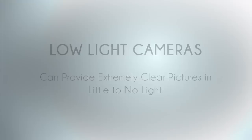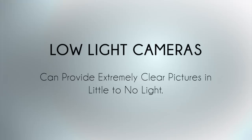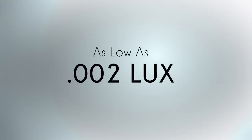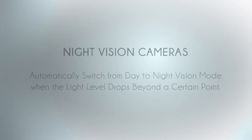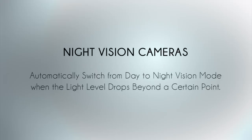Low light cameras can provide extremely clear pictures in almost no light. The light level can be as low as 0.002 lux. If there will be periods of zero light, a long-range night vision PTZ camera may be the right choice. Night vision cameras cast out infrared light, which allows them to generate clear black and white video.